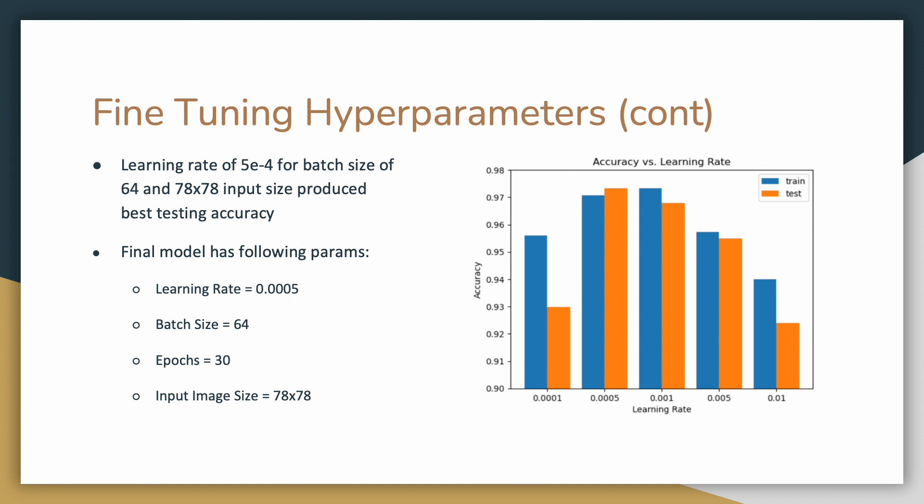Next, we decided to tune the learning rate of the optimizer in our model. We tested five different learning rates for models taking in 78 by 78 input images, batch size of 64, and trained each for 30 epochs once again. As we can see from the plot, a learning rate of 5 times 10 to the negative fourth resulted in the highest testing accuracy.